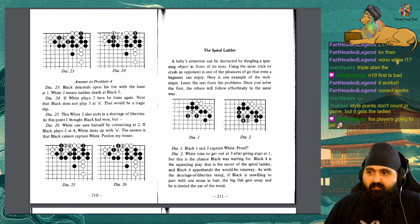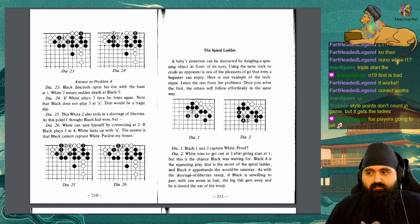Answer to problem 4, Diagram 23: Black descends upon his foe with the hane at 1. White 2 means sudden death at black 5. Diagram 24: If white plays 2 here, he loses again. Note that black does not play 5 at A. That would be a tragic slip. Diagram 25: This white 2 also ends in a shortage of liberties. At this point, I thought black had won, but white can save himself by connecting at 2. If black plays 3 at 4, white links up with A. The answer is that black cannot capture white. Pardon my mistake.